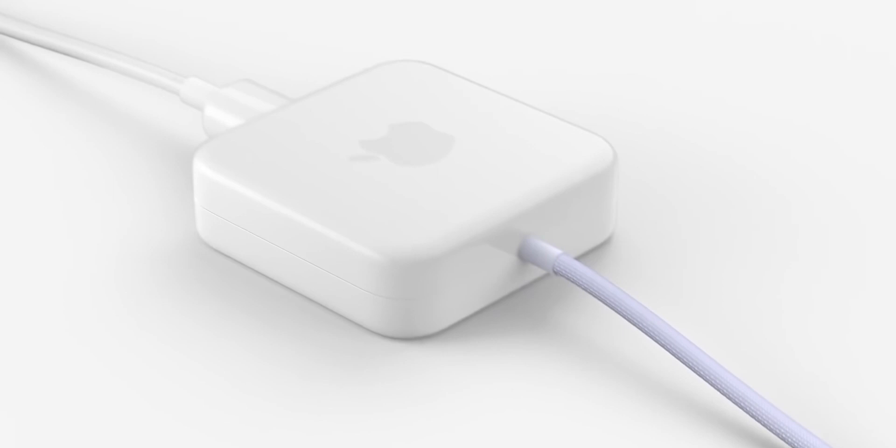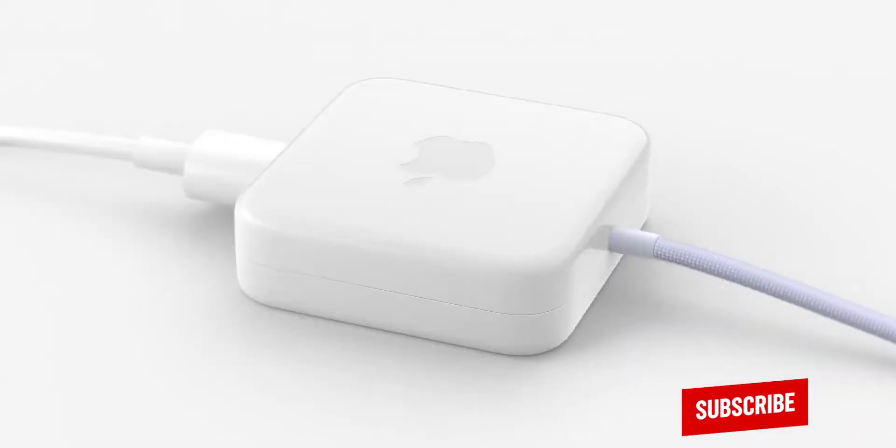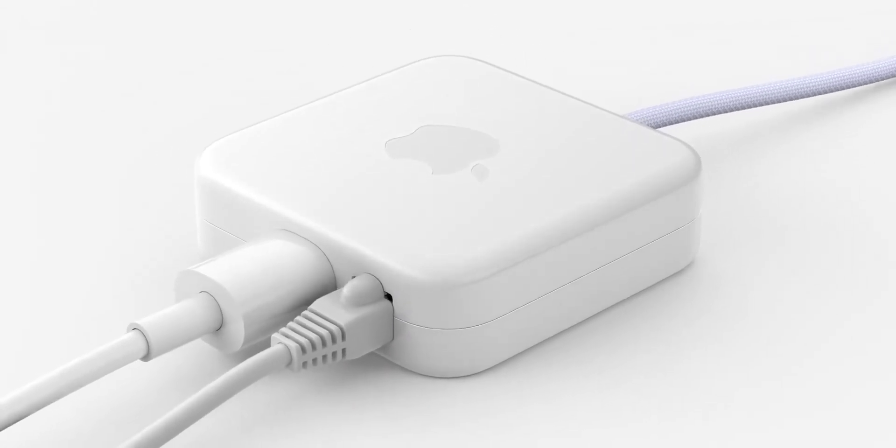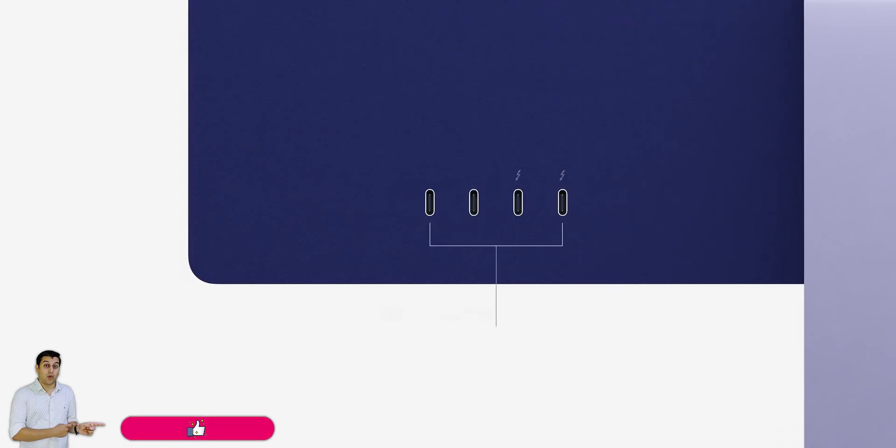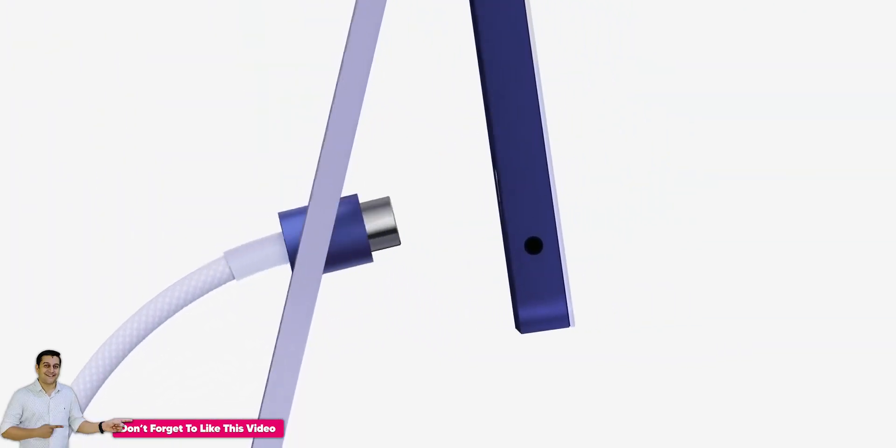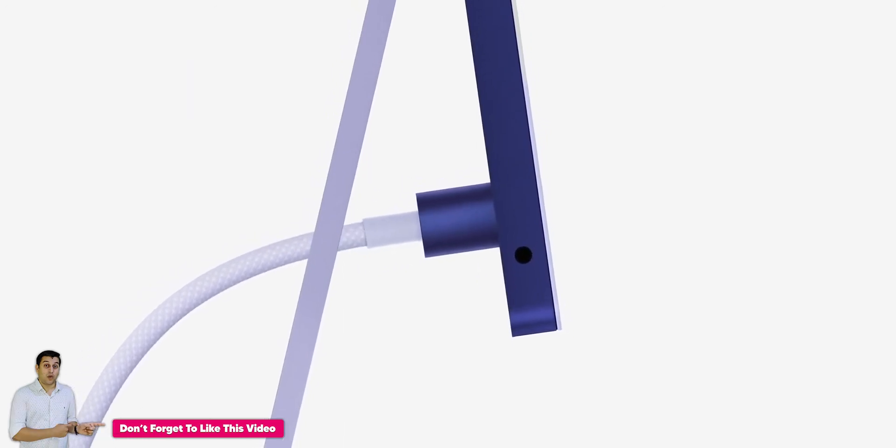And one interesting thing is that the LAN port is in the power adapter for a clean design behind the Mac. But here you will find USB-C ports and the headphone jack on the side, because the iMac is so thin that you cannot put the headphone jack in the back.